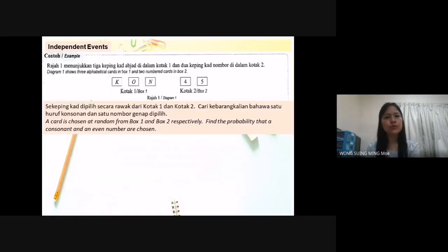Diagram 1 shows 3 alphabetical cuts in box 1 and 2 numbered cuts in box 2. A cut is chosen at random from box 1 and box 2 respectively. Find the probability that a consonant and an even number are chosen.